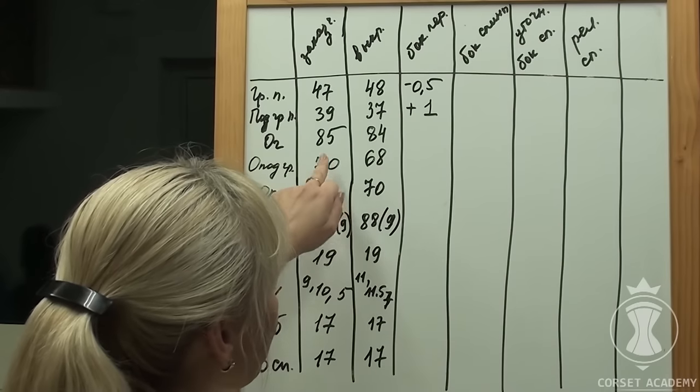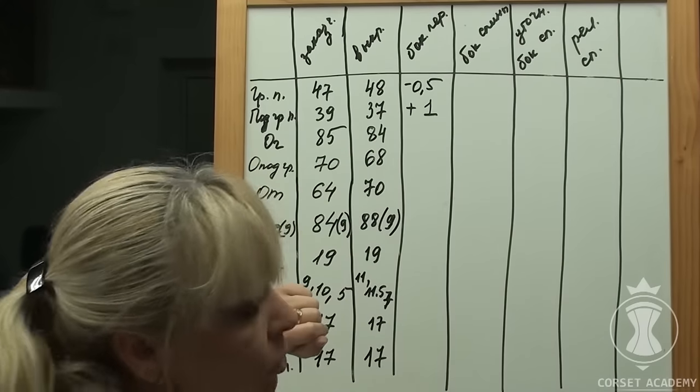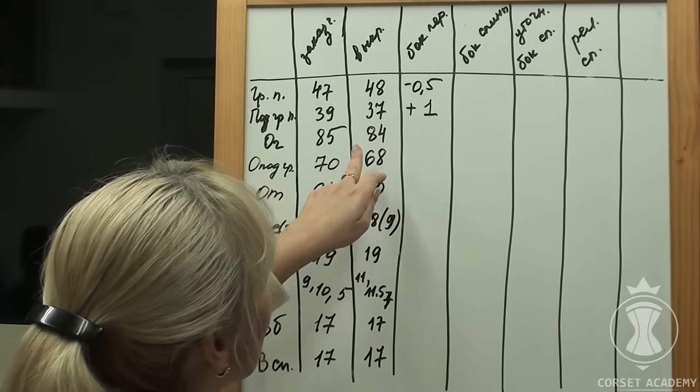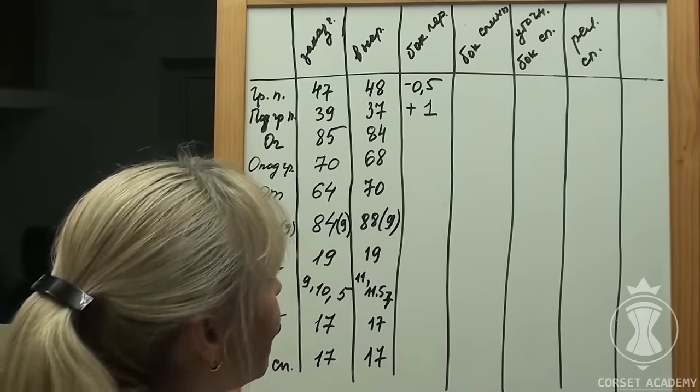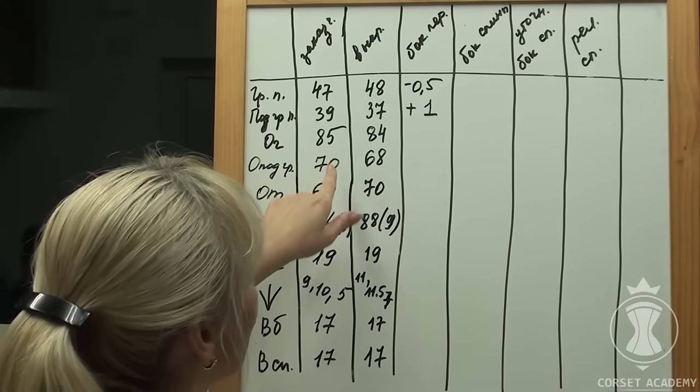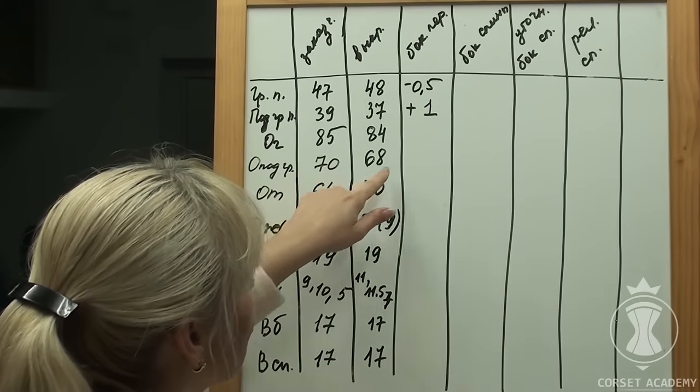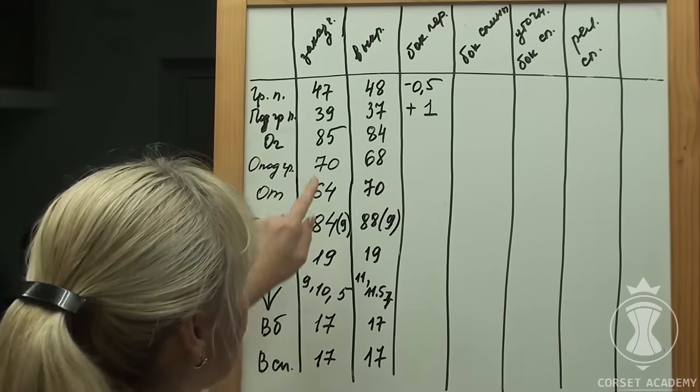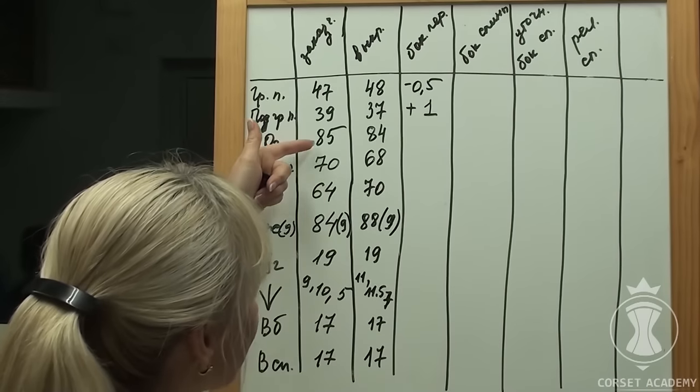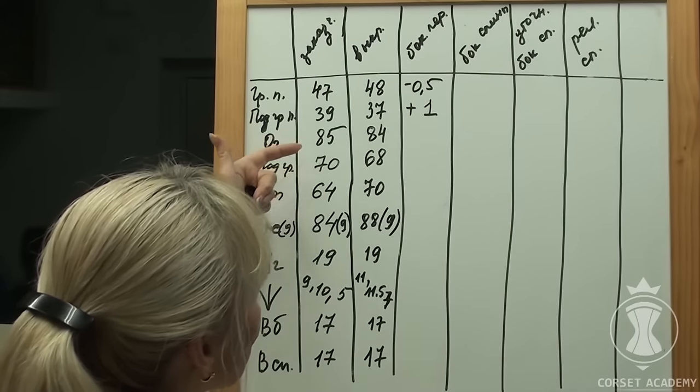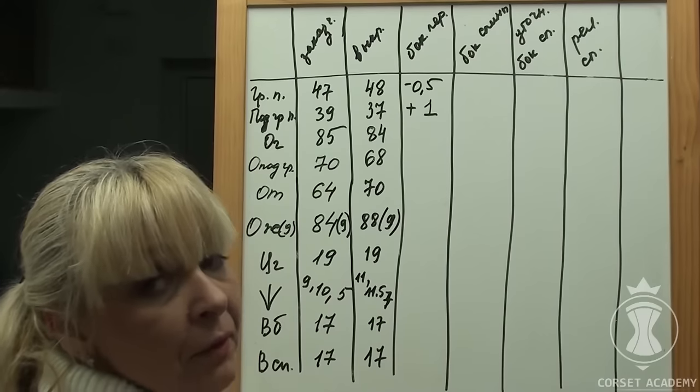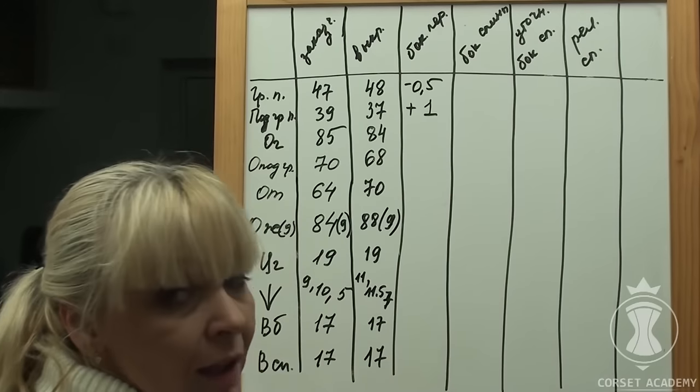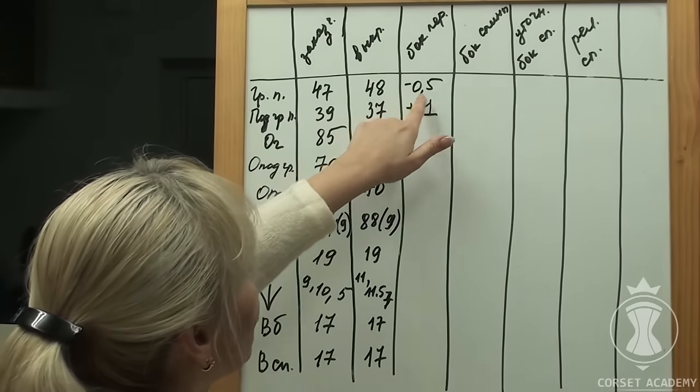First of all, let's look at all other measurements and try to estimate what adjustments in general we really have to make. The client's bust circumference almost coincides with the pattern, only some 0.5 cm is lacking. Her waist and stomach circumferences are considerably smaller than on the pattern. The clip and other measurements are not as relevant.